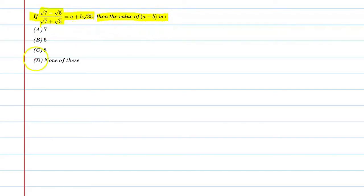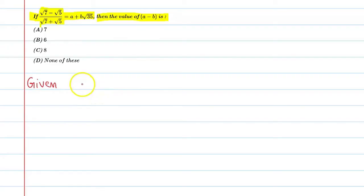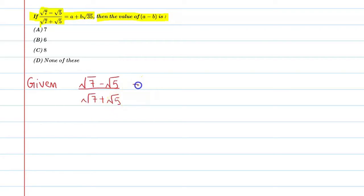So first, students, hum is question mein a aur b ki value find karenge, then in the end we will subtract. So let's start. First of all, we will write the given expression or equation: (√7 - √5) / (√7 + √5) is equal to a + b√35.